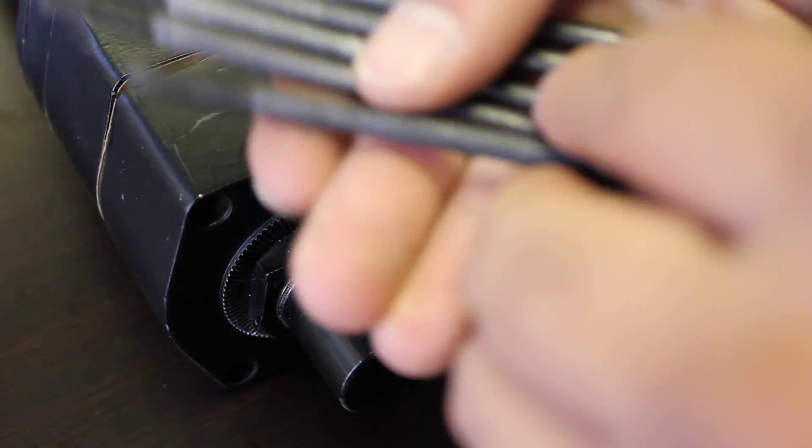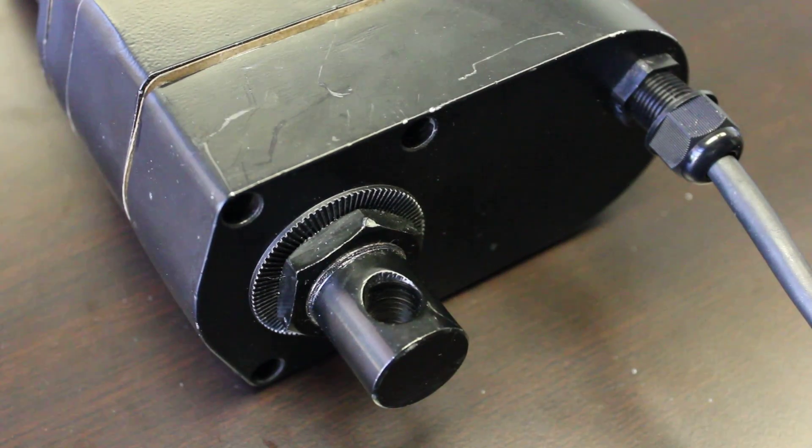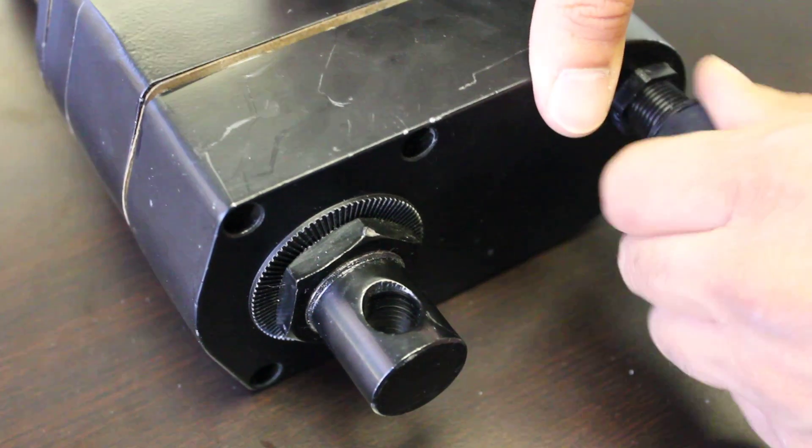Just make a note that one of them is smaller than the rest. It goes on the far end here. Once you remove the five screws, you can remove the cable restraint.